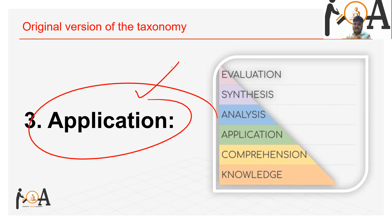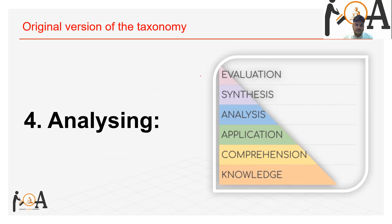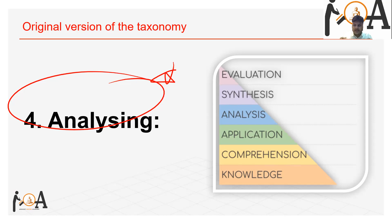The fourth level is Analysis. Analyzing involves examining and breaking information into component parts, determining how the parts relate to one another, identifying motives and causes, making inferences, and finding evidence to support generalizations. Its characteristics include analysis of elements, relationships, and organization. For example: comparing and contrasting four ways of serving foods made with apples and examining which has the highest health benefits.